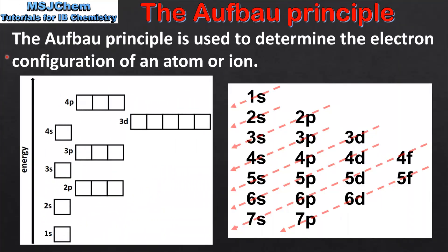The Aufbau principle is used to determine the electron configuration of an atom or ion, and it gives an order of filling an atom with electrons. According to the Aufbau principle, electrons fill the lowest energy sublevels first. The sublevels in order of increasing energy are: 1s, 2s, 2p, 3s, 3p, 4s, then 3d. Note that the 4s sublevel is slightly lower in energy than the 3d sublevel.